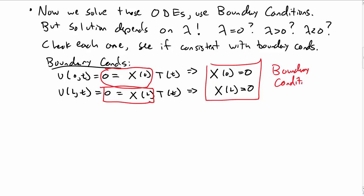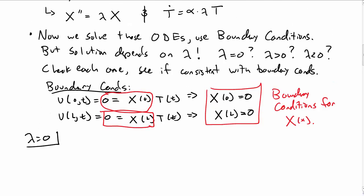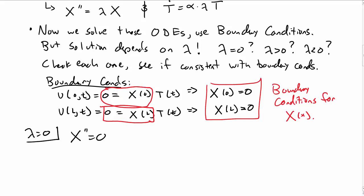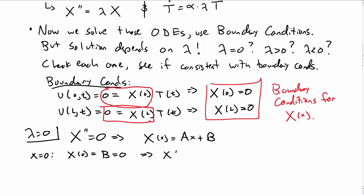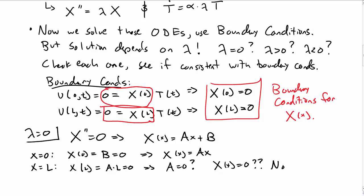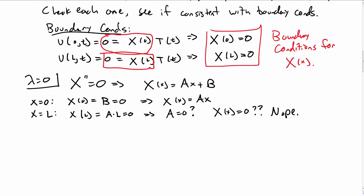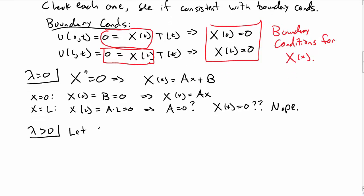Considering the boundary conditions for X(x), let's look at lambda = 0. The ODE becomes X-double-prime = 0, so X = ax + b. Applying X(0) = 0 gives b = 0, so X = ax. Applying X(L) = 0 gives aL = 0, which means a = 0. So X(x) = 0 identically — that won't work. Lambda = 0 fails.